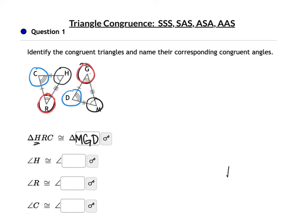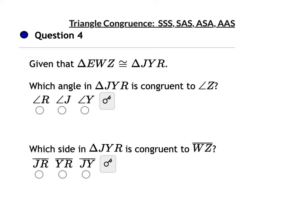Looking at the congruence statement, since H is first it corresponds to M, R is second and G is second, and C is third and D is third. Angle C is congruent to angle D. For segment correspondence, since WZ are the last two letters and YR is the corresponding pair, YR is congruent to WZ.